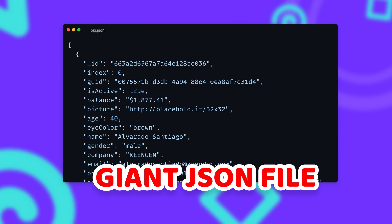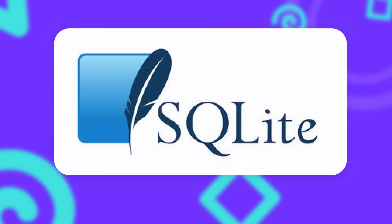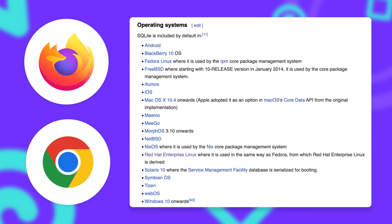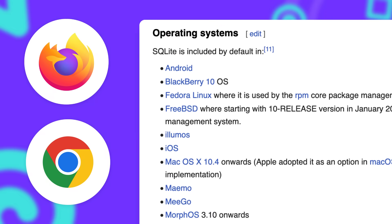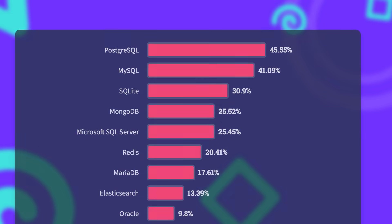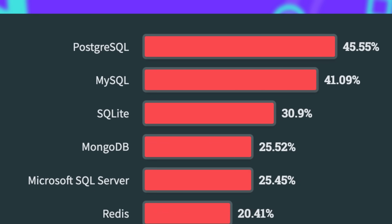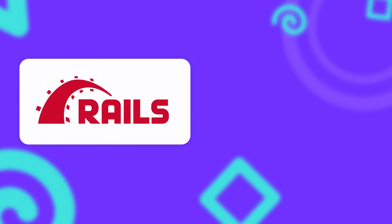Storing all data in one single file might not be a bad idea after all. There's one database that got a lot of attention in recent years — it's called SQLite and is a single file database. Even if you haven't heard of SQLite, you've definitely used it, because browsers like Firefox and Chrome use it to store configuration data, and basically every modern operating system includes SQLite by default. According to the Stack Overflow developer survey, it's the third most popular database behind Postgres and MySQL, and is also the default database for Ruby on Rails and Django.